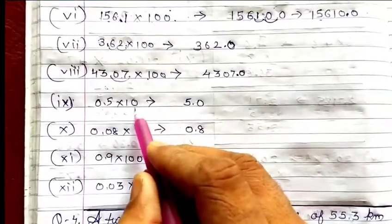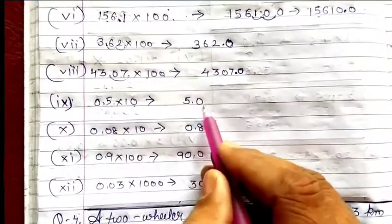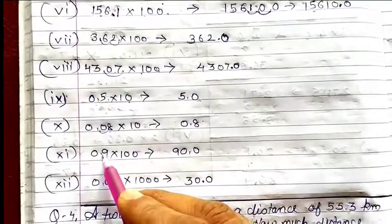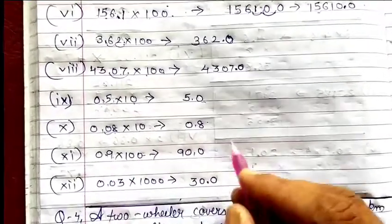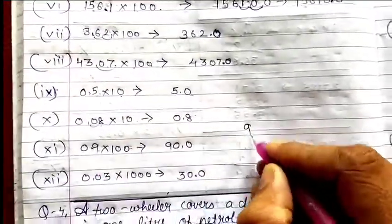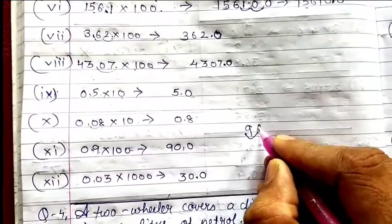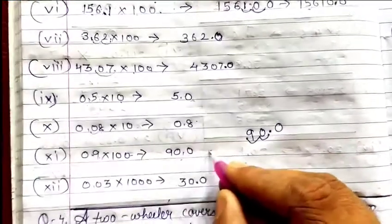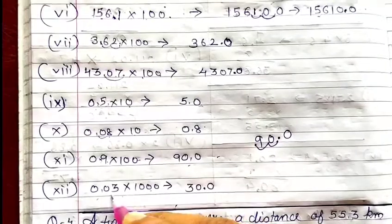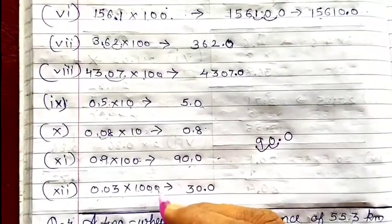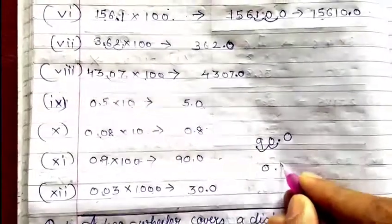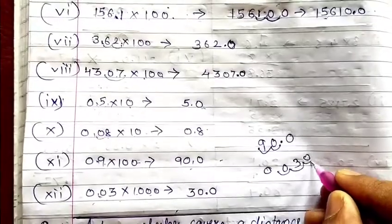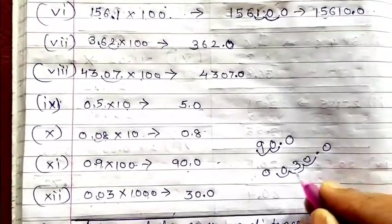Then 0.5 into 10: move one decimal place, it becomes 5.0. Then 0.08 into 10: move the decimal one place, it becomes 0.8. Then 0.9 into 100: move two places — the decimal comes over here twice — it becomes 90.0. Then 0.03 into 1000: move three places, put zeros, and it becomes 30.0.